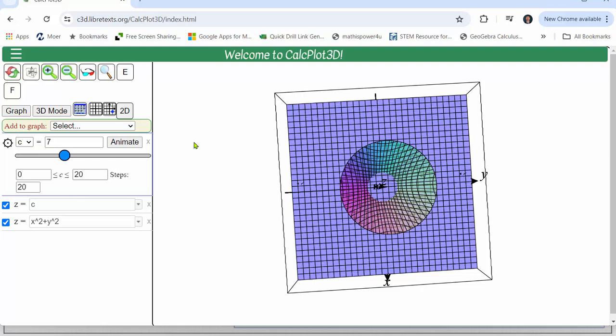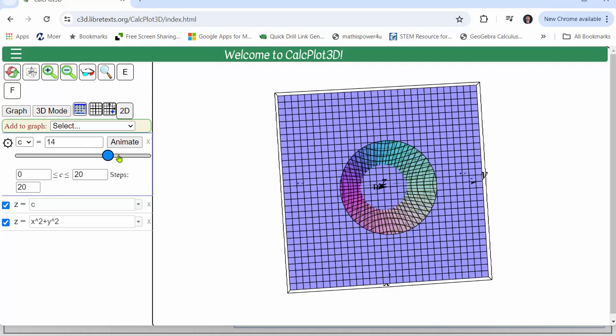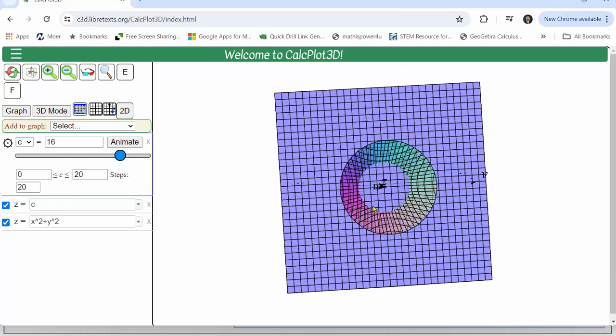And for our problem we're told to let c equals 16. So if we graph the plane z equals 16 which is here, this intersection which is a circle is a level curve we want to graph.